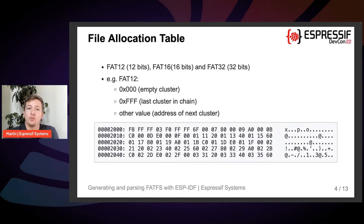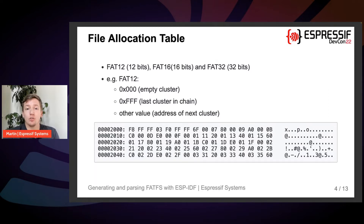Another property of the FAT file system is the size of file names. You can choose between short and long file names by specifying the option in kconfig using idf.py menuconfig. Without selecting the long file names option, the protocol uses the 8.3 filename pattern. Otherwise, you can use the Universal Coded Character Set UCS when long file names are allowed.